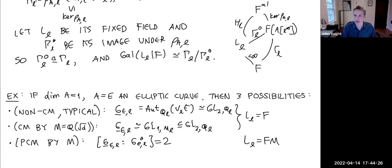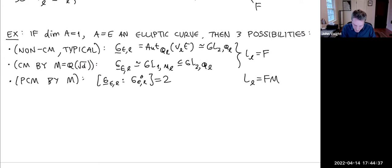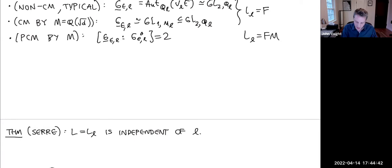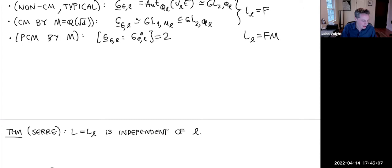The first theorem, already observed in the elliptic curve case, is that the field L is independent of ℓ. That means there's a unique minimal extension of F — necessarily Galois over F — over which all of the ℓ-adic monodromy groups are connected for all ℓ. In particular, it implies that over L and any finite extension, the image of the Galois representation is Zariski-dense inside G_{A,ℓ}.